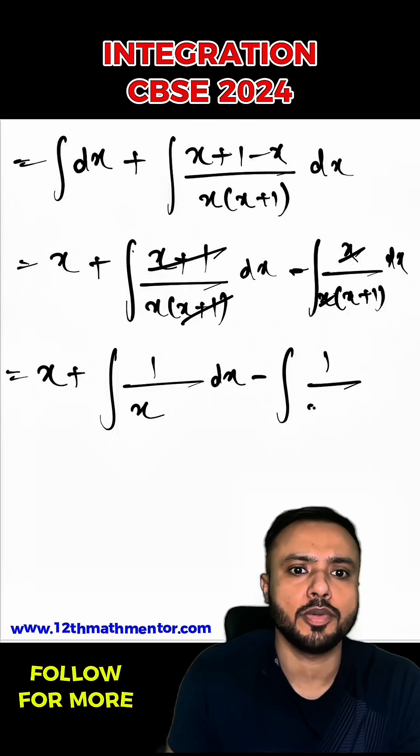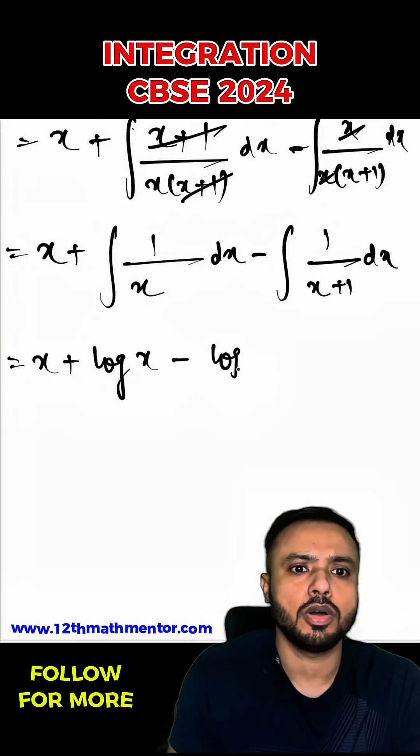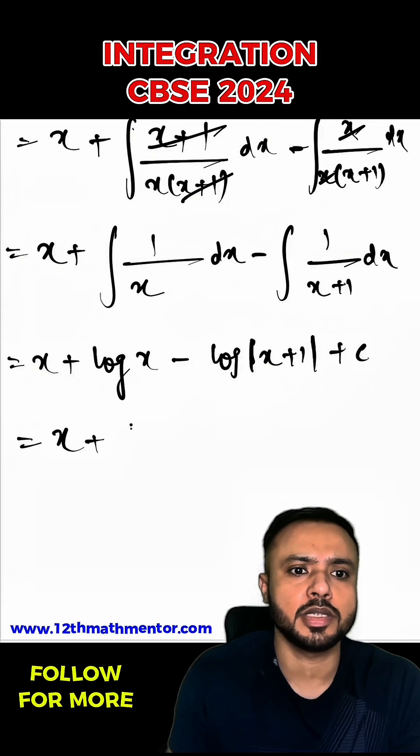So it would be x plus log x minus log of x plus 1 plus c. So I can use logarithmic property here and I can write it as x plus log of x upon x plus 1 plus c. So this is the desired answer of the asked integral.